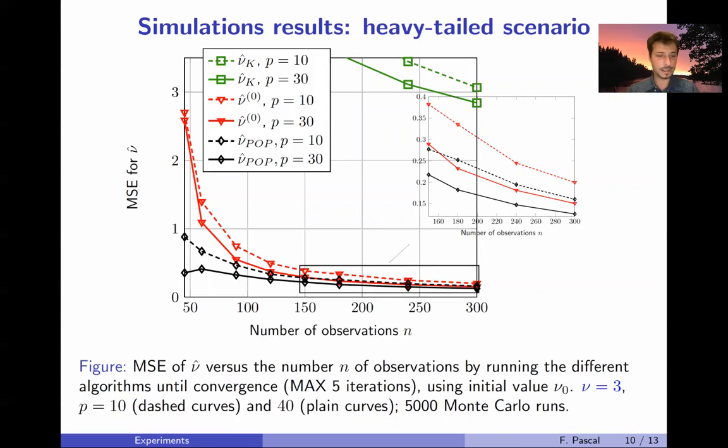So let's go for the first experiment, so the heavy-tailed case. Nu is small. What we can see is that of course the kurtosis-based estimator is not as good as the two others, so the proposed POP estimator and this nu hat zero. And of course these figures show that the performance of the POP estimator are better than the others. What is interesting to notice here is that the performances are very good especially in the case where p and n are quite small. The performance are still very good even in this area, that is not the case for other estimators.